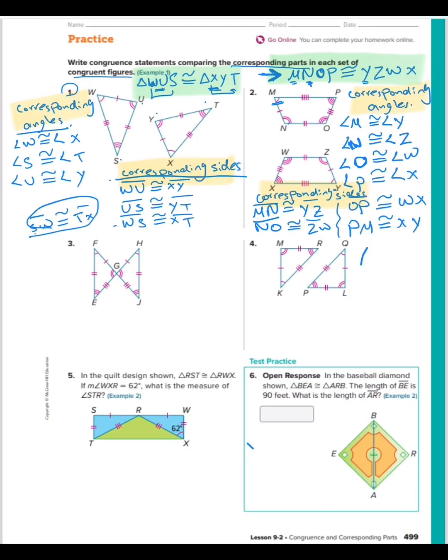Question 3. Same as the beginning, I will write F, G, E. It's congruent to the triangle H, G, J.